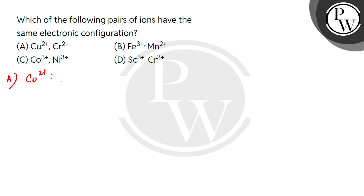Cu²⁺: we have to remove two electrons and it will be 3d⁹. For chromium 2 positive, the configuration will be 3d⁴. Here chromium has the configuration 3d⁵ 4s¹, so if we remove two electrons it will be 3d⁴. So option A is ruled out.